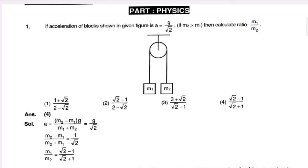The equation for acceleration is g root over 2. We will calculate the ratio from this.